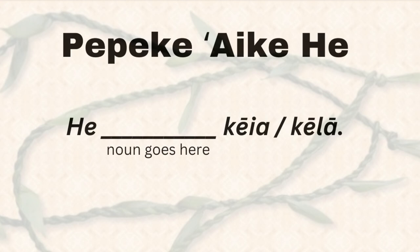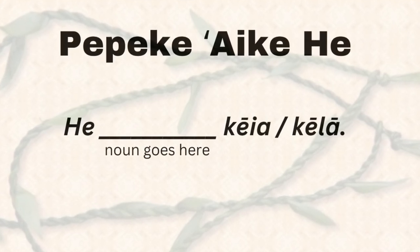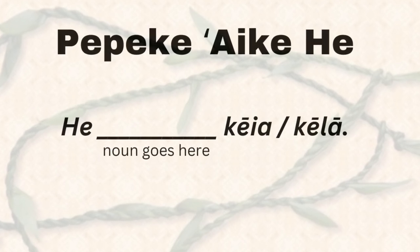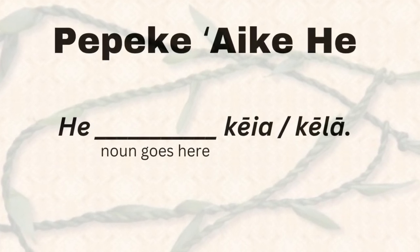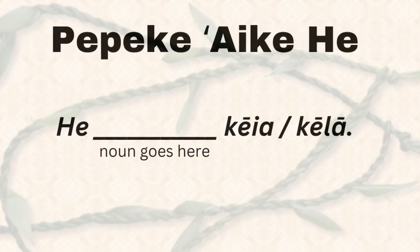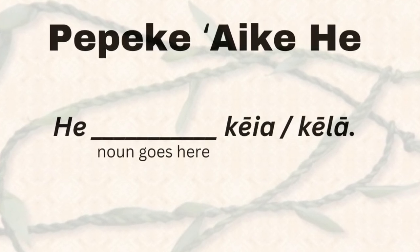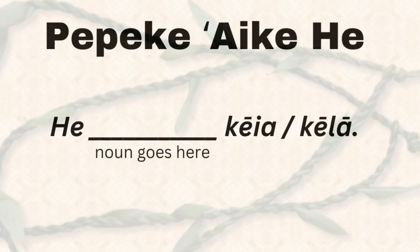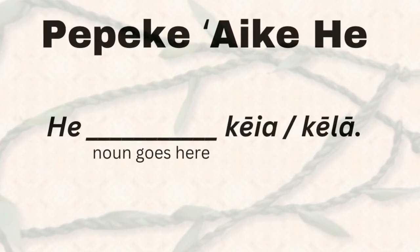Basically, this structure is always going to stay the same. It's always going to start with he, it's always going to have the noun next, and then the last word is either going to be keia or kela. This is just starting very simple. Later we'll learn how to use this sentence in other ways, like 'she is a' or 'you are a.' But for now we're just doing 'this is a' and 'that is a.'